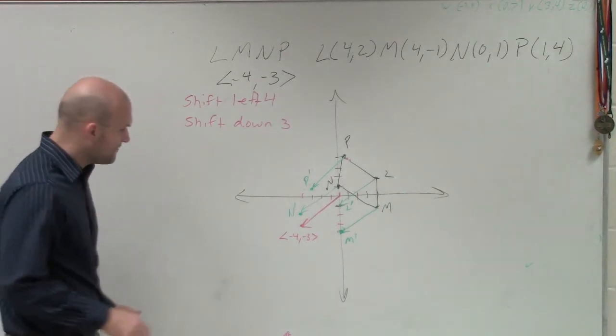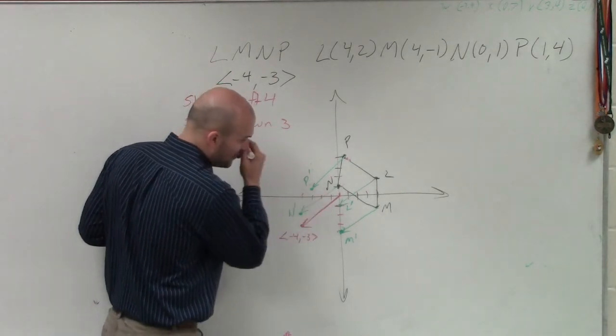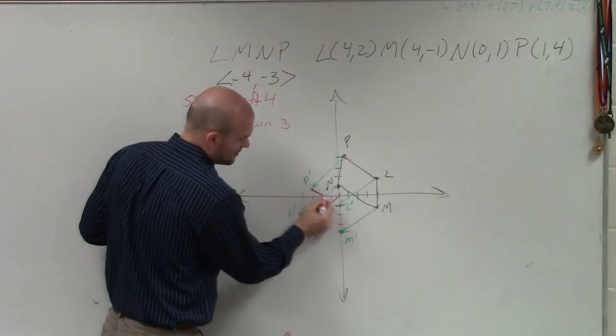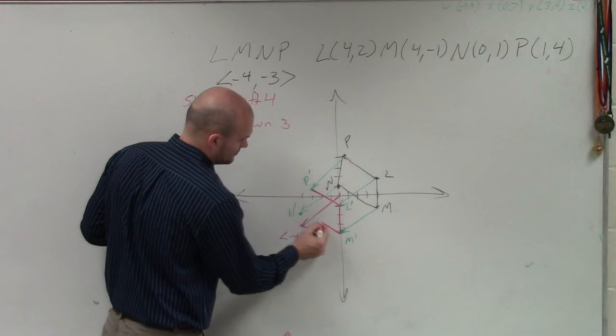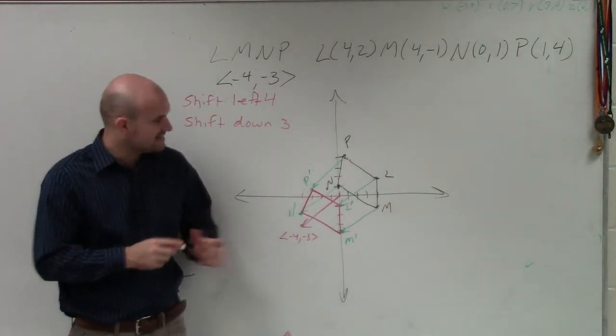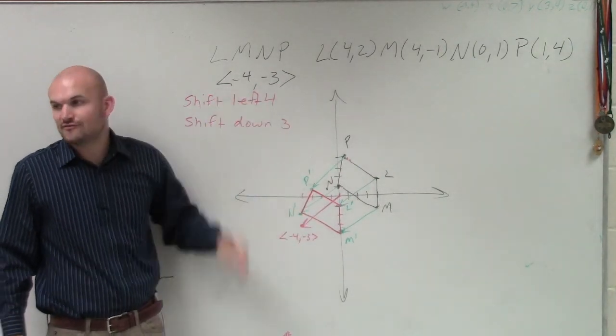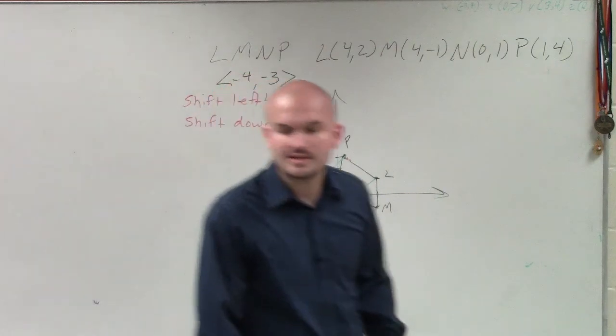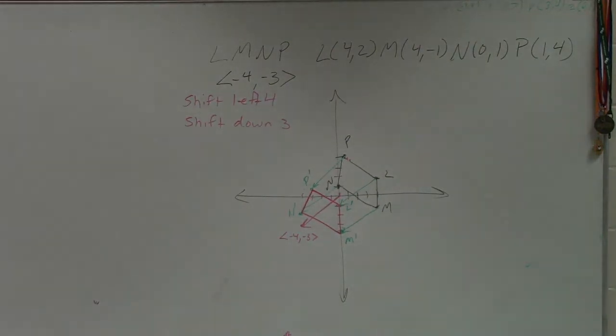Now, once I have that, now I can simply just go and connect my new prime points. And you guys can see I have now the exact same vector, but that has been transformed by the vector negative 4, negative 3. OK, Shane? Make sense? Good. Isn't that cool? OK. What I'd like you guys to do now, as I go around.